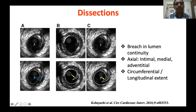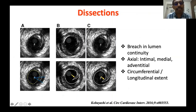What is dissection? Dissection is a breach in lumen continuity. Here you can see lumen continuity with a breach in it — the typical appearance of dissection. Dissection is classified by axial extent: intimal dissection, medial dissection, or adventitial dissection.